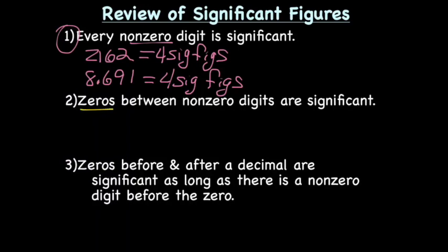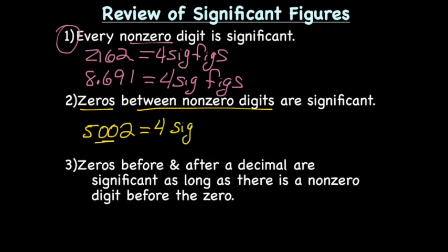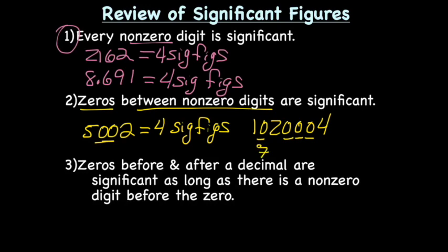How about zeros? Zeros between non-zero digits are significant. So if I had 5002, those two zeros are significant as well as the non-zero digits, so we have four sig figs. If I had a number like 1,020,004, this zero is between two non-zero digits, as are those three. So it looks like we have seven sig figs.